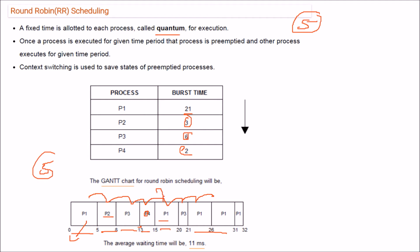P1 comes back for another 5-cycle quantum, then P3 returns and only needs 1 cycle (since 5 of its 6 are done), completing quickly. Then P1 takes another round — since its burst is 21, after two rounds of 5 it needs 11 more, completing in the final pass. The average waiting time for Round Robin is 11 milliseconds, accounting for time in the waiting queue.